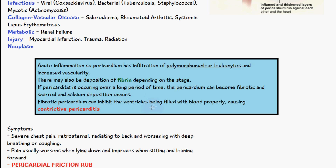Once the pericardium becomes fibrotic, it inhibits the ventricles from filling properly because there is constriction around the ventricle, so they wouldn't be able to fill to their maximum potential. When this occurs, it is known as constrictive pericarditis.